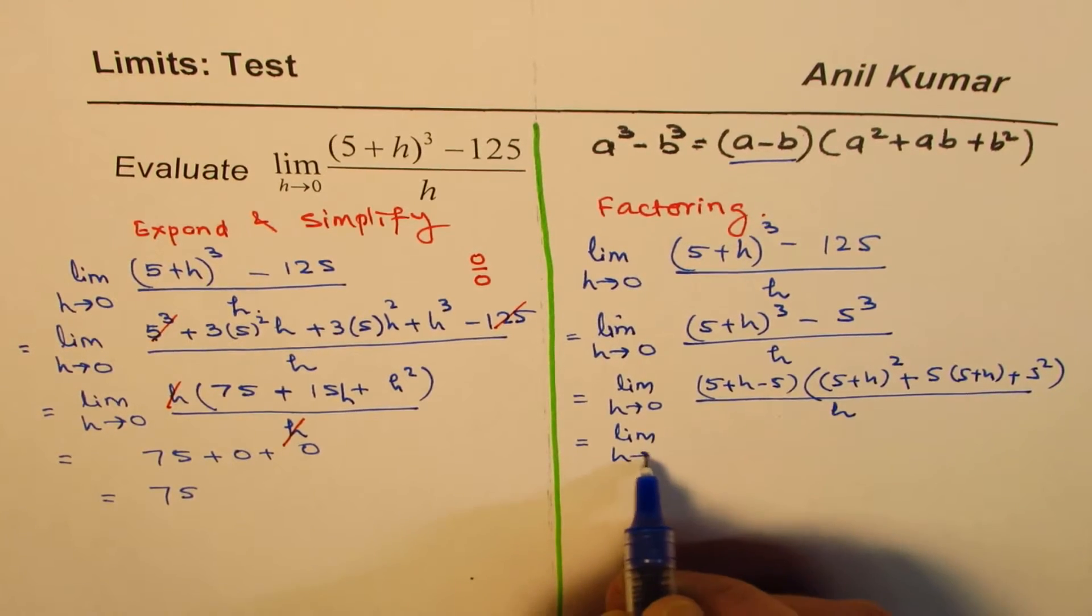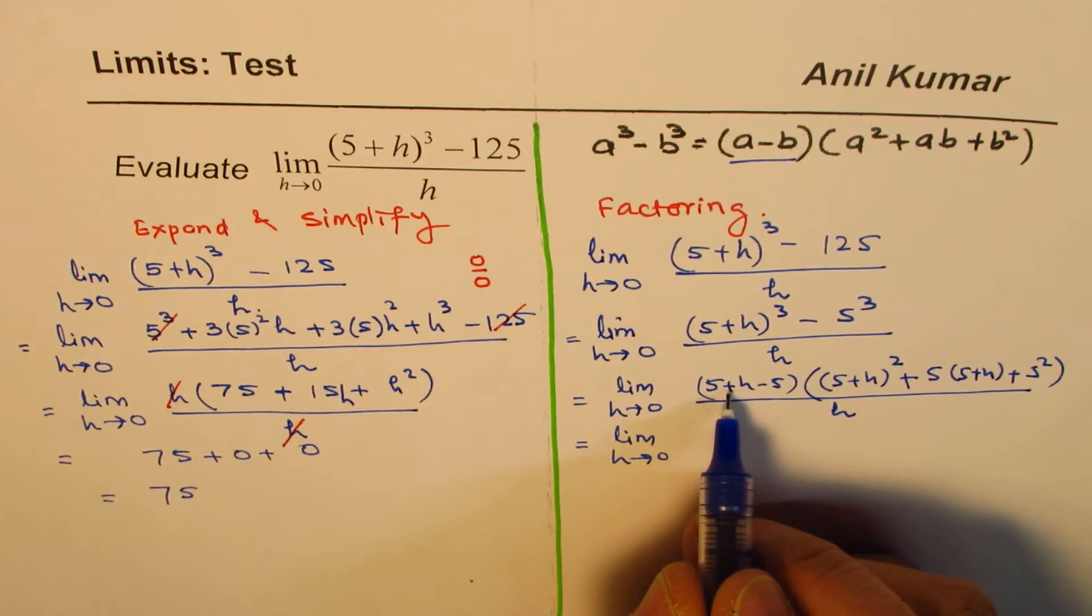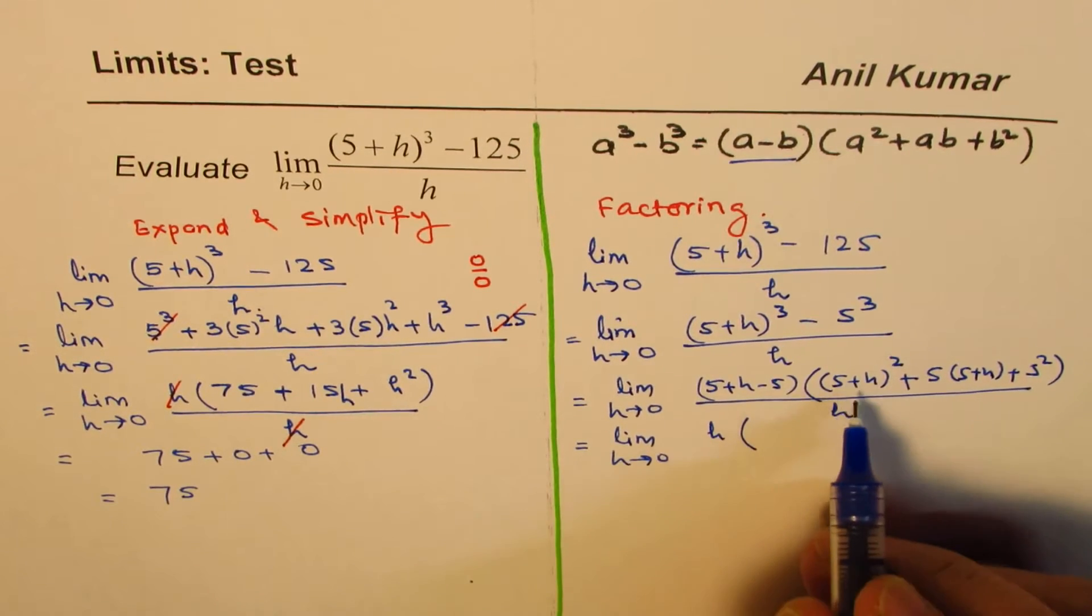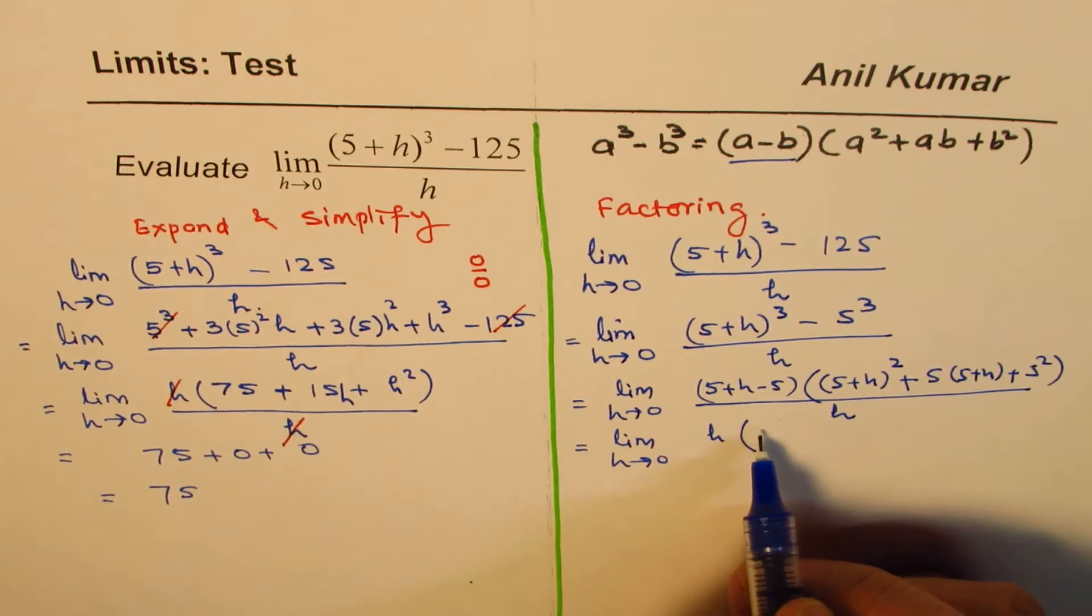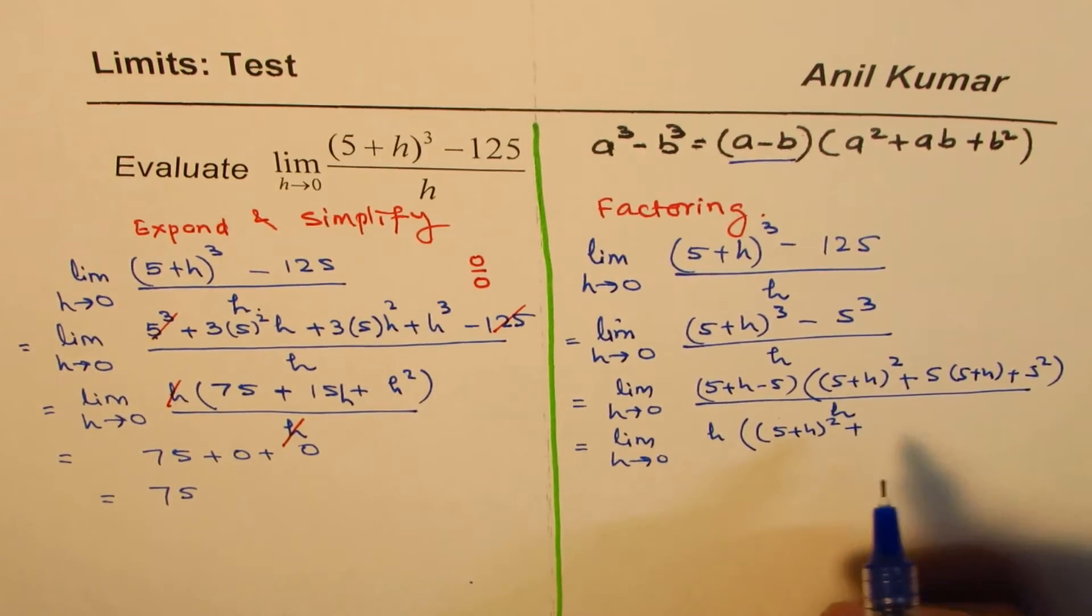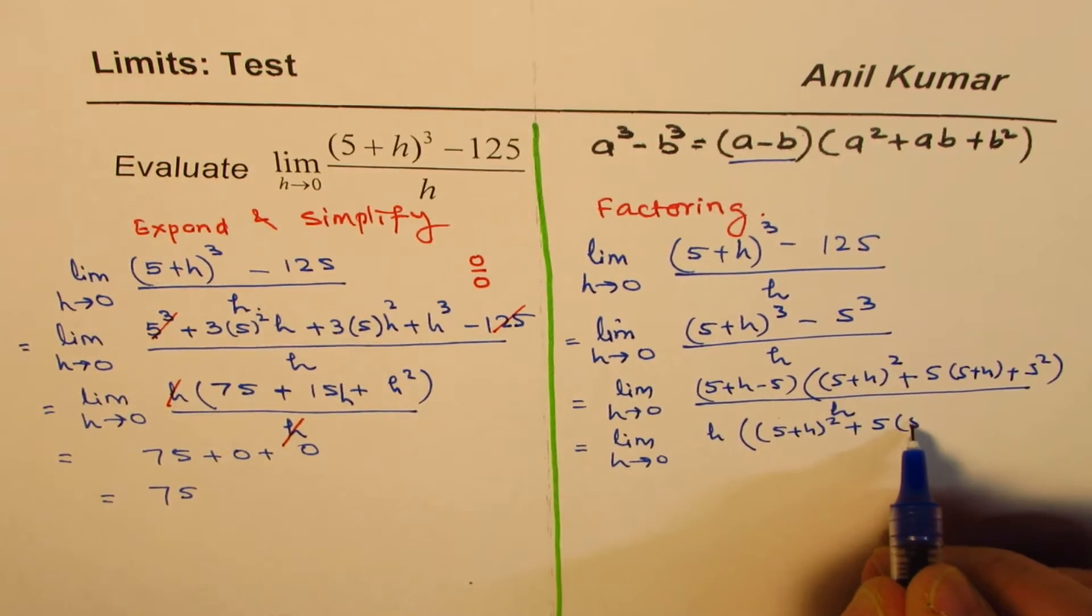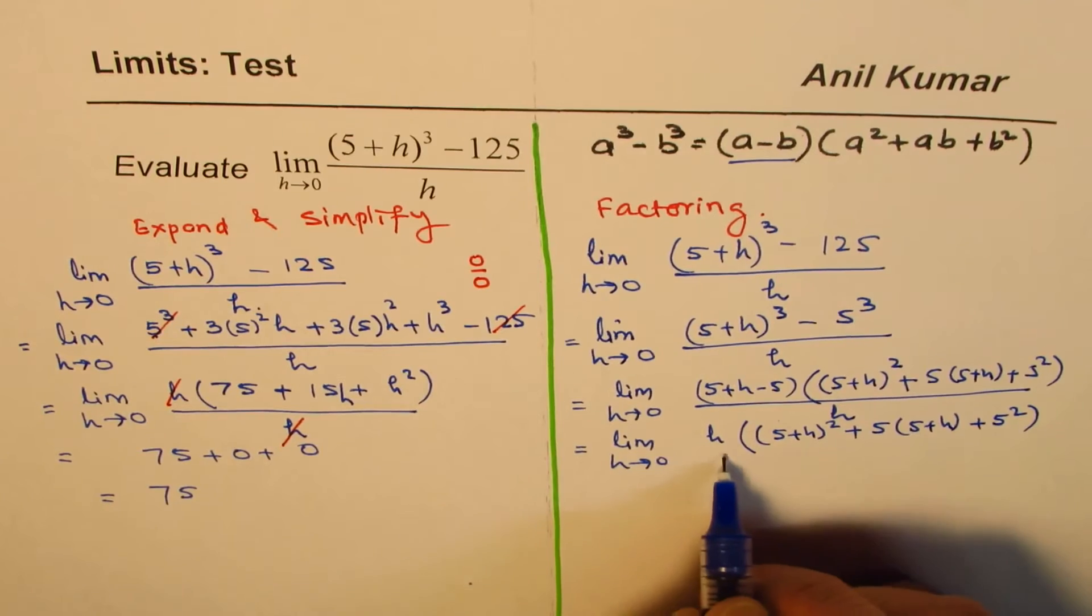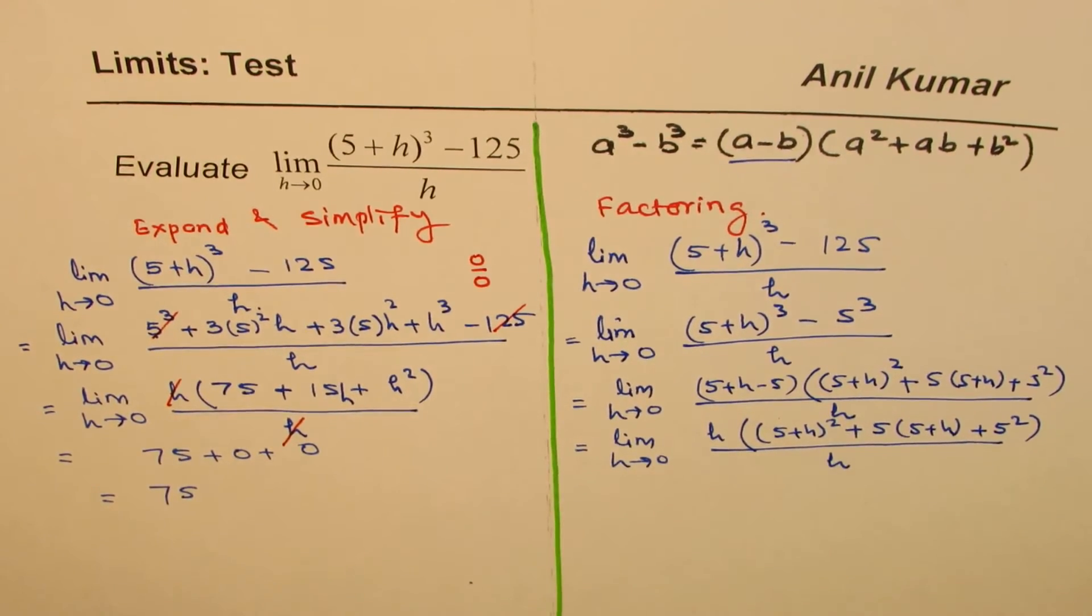Now, from here, you can see 5 plus h minus 5 is h, right? So, we get h here. 5 plus h whole square. So, we have 5 plus h whole square plus 5 times 5 plus h plus 5 square divided by h.